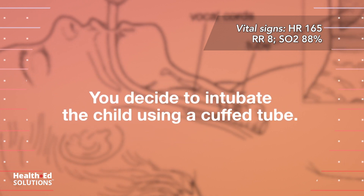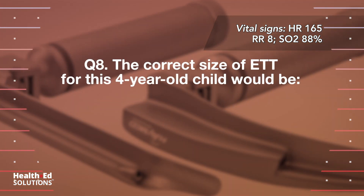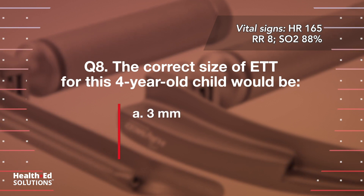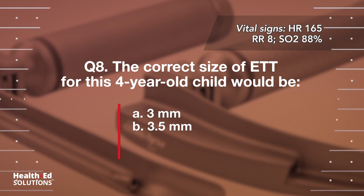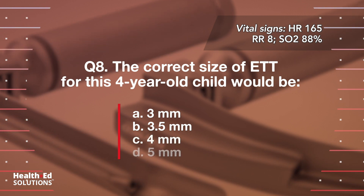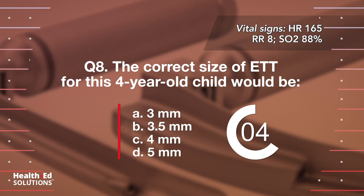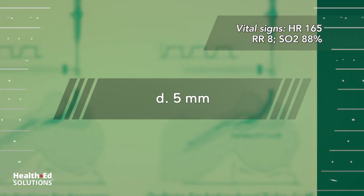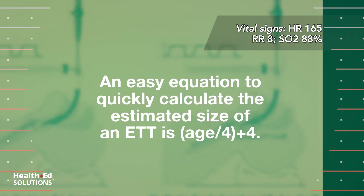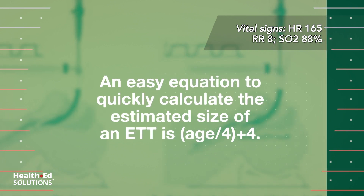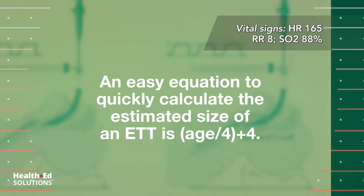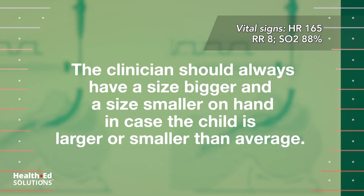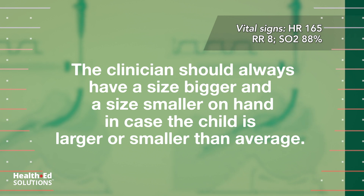You decide to intubate the child using a cuffed tube. Question 8: The correct size of ETT for this 4-year-old child would be: A) 3mm; B) 3.5mm; C) 4mm; D) 5mm. Correct answer D — 5mm. An easy equation to quickly calculate the estimated size of an ETT is age divided by 4 plus 4. The clinician should always have a size bigger and a size smaller on hand, in case the child is larger or smaller than average.